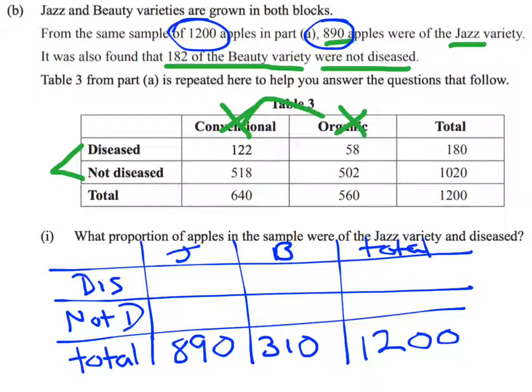Now let's look at what other information we've been given. We're told that 182 of the apples that are Beauty were not diseased. Now let's see if we can finish filling in the rest of the table. I know that for Beauty apples, I've got 310 Beauty apples in total. If 182 of them are not diseased, then 310 minus 182 leaves me with 128 Beauty apples that are diseased.